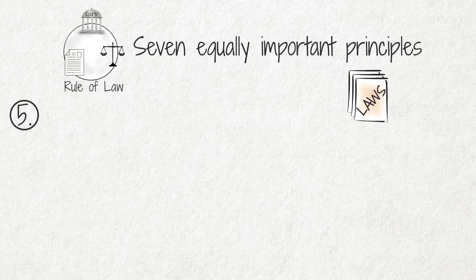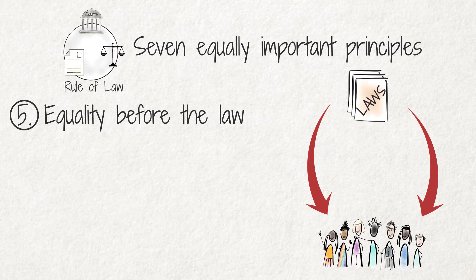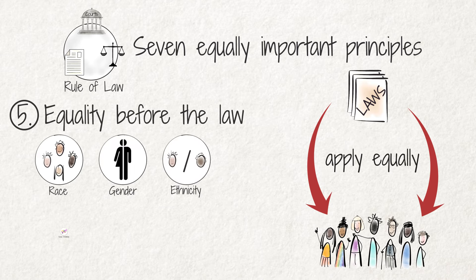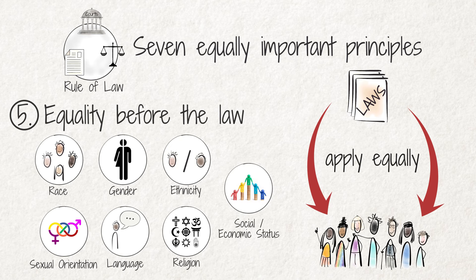Principle 5 is that everybody must be equal before the law. The law must apply to everyone equally. Aspects such as race, gender, ethnicity, sexual orientation, language, religion, but also social or economic status should not determine which law applies to you or how the government applies the law to you.